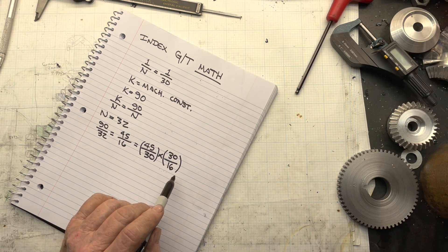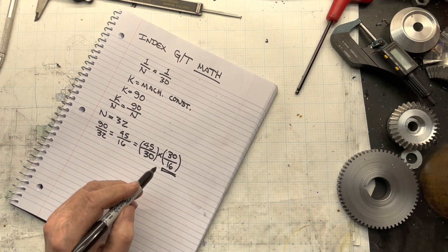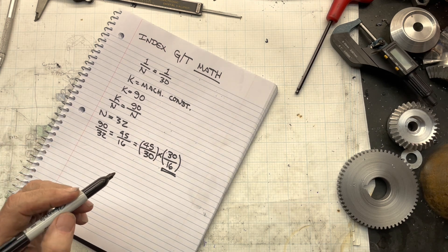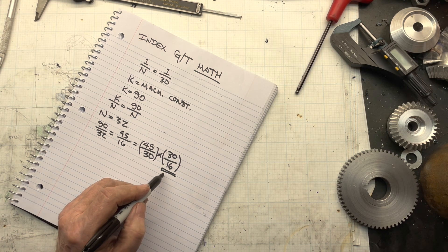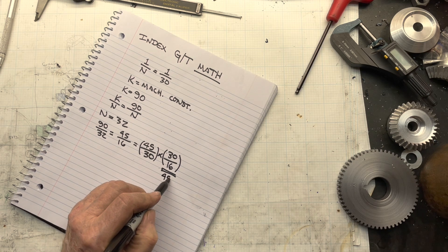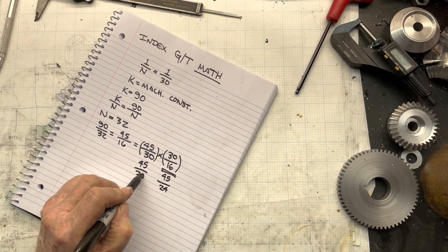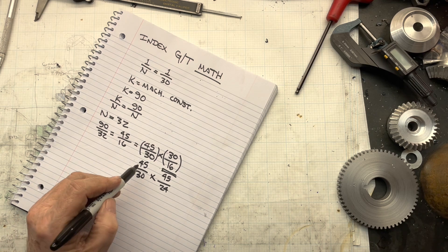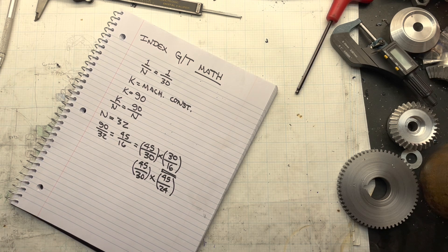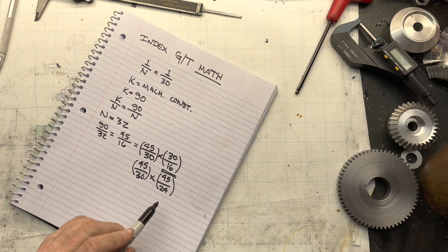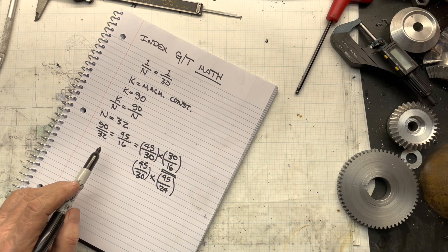But what I can do is, if we just look at this piece, I can multiply each one of these by, say, two. Well, let's do one and a half, which is three halves as a fraction. And I end up with 45 over 24. So, I've got 45 over 30 times 45 over 24. And those are the two stages of reduction. Everything else in my train is either an input, an output, or an idler. But if I have those two stages put together, I'll get the right ratio for a 32-tooth gear.